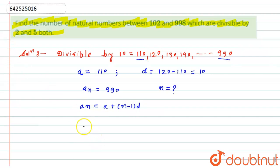I will put the values over here: an is 990 equals a, which we calculated as 110, plus n (we have to calculate) times d, which is nothing but 10.